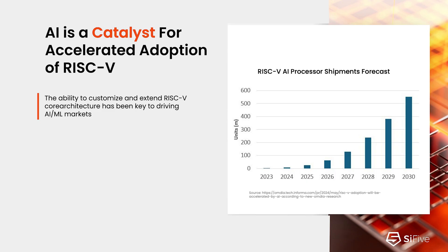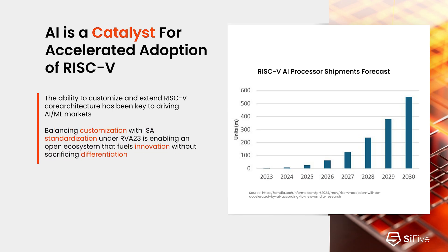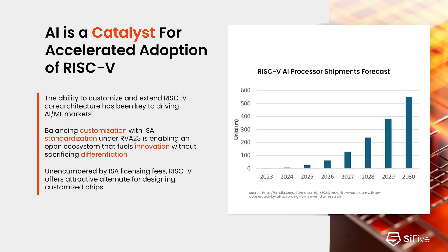That's something we built into RISC-V from the very beginning — the ability to extend and customize for given use cases. Software is a key aspect as well. At RISC-V, we have a standard architecture embodied in the RVA-23 profile for application processors. You can build your customized innovation on top of a standard base, so most of the software you need will be there and running on the standard base, but then you can extend it with the features you need to accelerate these AI algorithms. This is what's really driving the interest in RISC-V, together with this open model where there are no fees to license the base ISA.